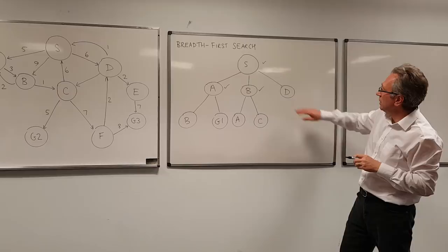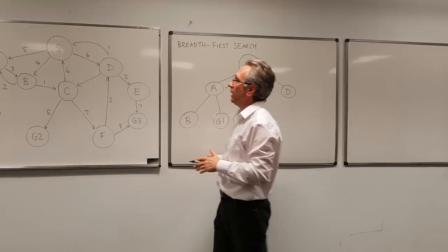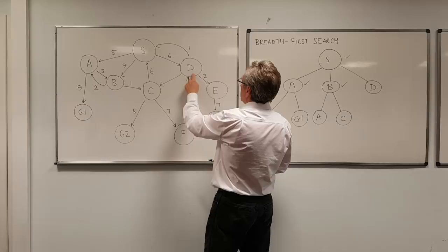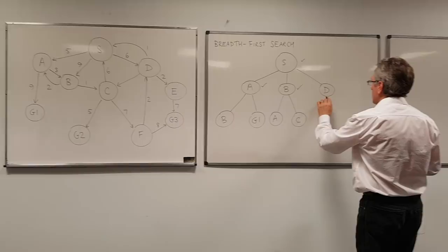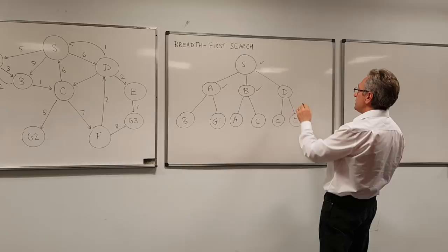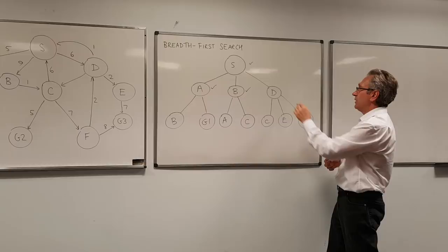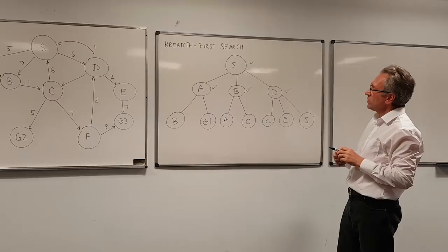So what I next do, that one is now visited, what I next do is I look at state D, ask if it's the goal state. No, it's not. And ask myself, where can I go to in a single step? Well, I can go to C, to E, and I can also go back to S. So a similar comment applies. I could, in fact, not go back to S here, but breadth-first search doesn't mind. So I'll put them all in here and say that D is now visited.